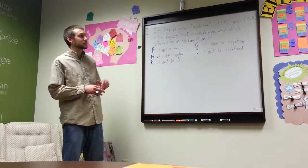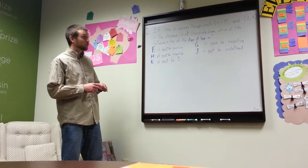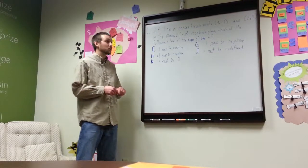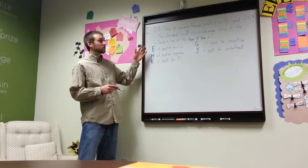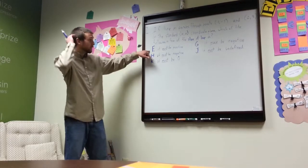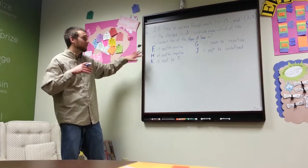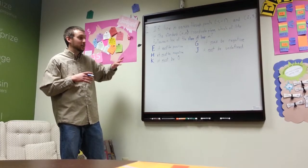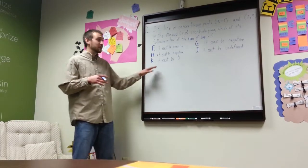if line n passes through points negative 1, negative 1, and 2, 3, in the standard x, y coordinate plane, which of the following is true of the slope of line m? f, it must be positive, g, it may be negative, h, it must be negative, j, it must be undefined, or k, it must be zero.